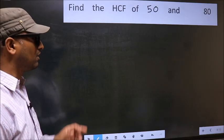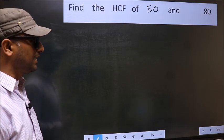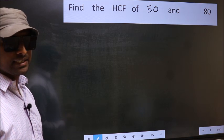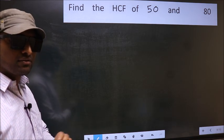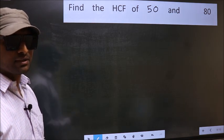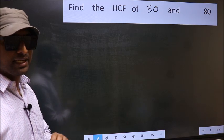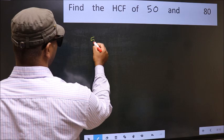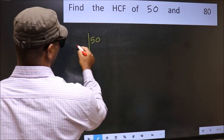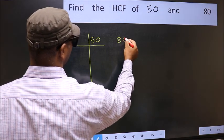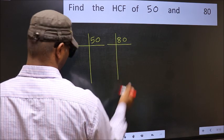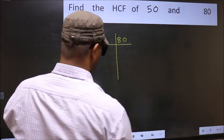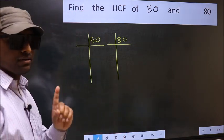Find the HCF of 50 and 80. To find the HCF, we should do the prime factorization of each number separately. What I mean is 50 and 80. This is your step 1.